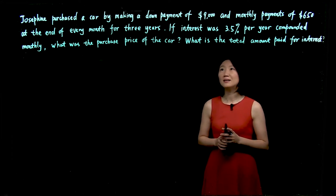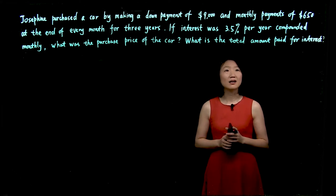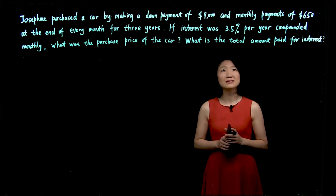Josephine purchased a car by making a down payment of $9,000 and a monthly payment of $650 at the end of every month for three years.